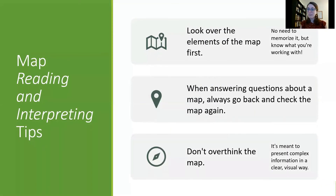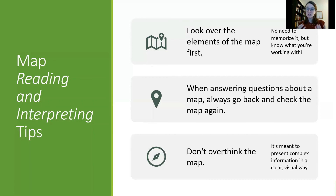When reading and interpreting a map on a test, first look over all the elements of the map — read the title, look at the key or legend, understand where this map is, and look at some of the labels. You don't need to memorize it; you just need to know what you're working with. When answering the questions, always go back and check the map again. Don't trust your first look. Lastly, don't overthink the map — it's meant to present complex information in a clear and visual way. All the information is there for you to interpret; you just need to pay attention to the details and piece it together.